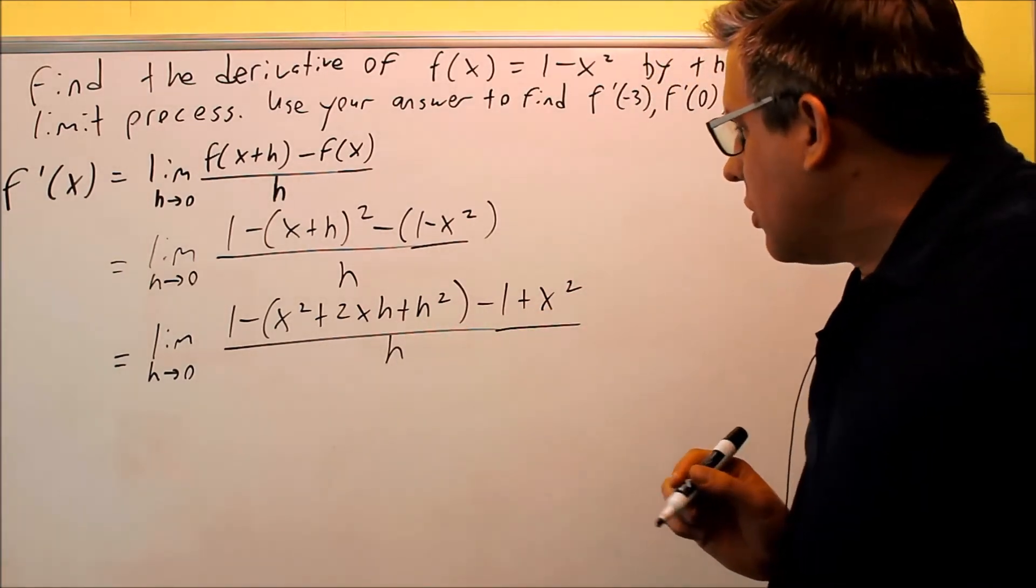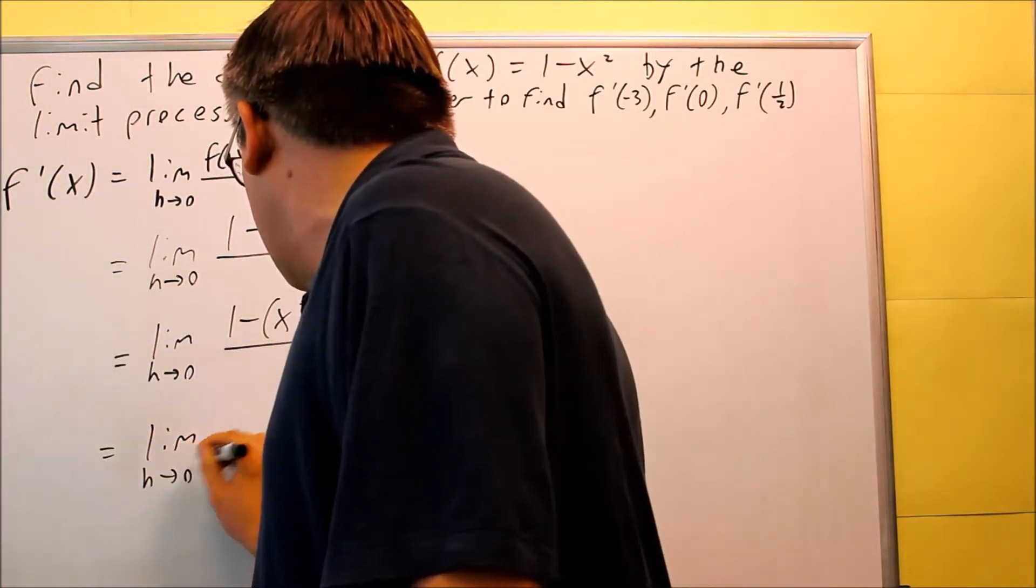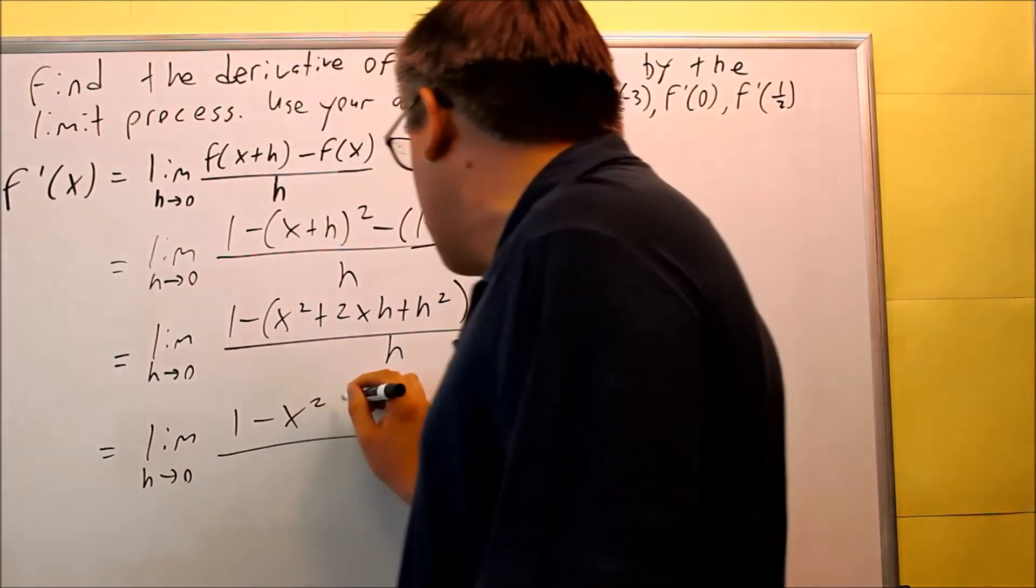We need to expand all this out. We're going to do limit as h goes to 0, and we're going to distribute the minus sign: minus x squared, minus 2xh,